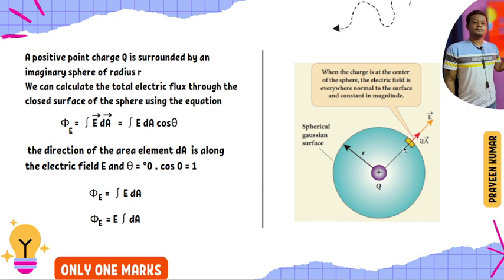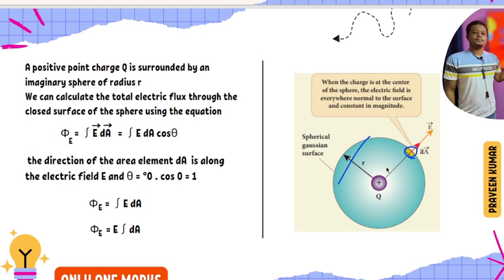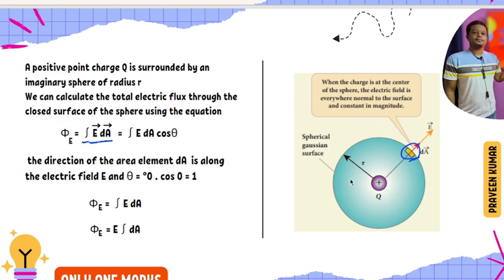In detail, we first calculate the electric flux for a small area element. The total electric flux is obtained by integrating the small area elements. So electric field E into small area dA gives the small element of flux, and integrating over the total sphere gives the total electric flux.